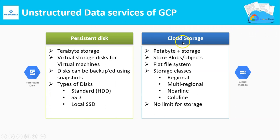Cloud Storage can hold up to petabyte-plus storage capacity, which means it is essentially unlimited. This cloud storage system is a flat file system used to store objects or blobs. Objects can be anything — a video file, a log file, a music file, etc. Regional, Multi-Regional, Nearline, and Coldline are the storage classes available in Cloud Storage. Based on the accessing frequency of the object, you need to choose the appropriate storage class. Cost also varies based on storage classes.